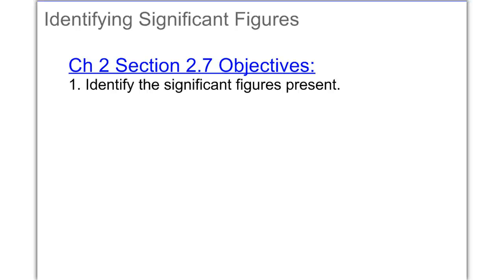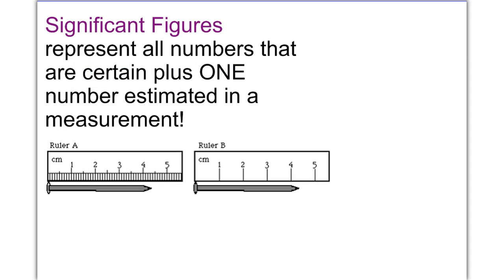Chapter 2, Section 2.7. We're going to learn how to identify significant figures present in a number. Significant figures represent all numbers that are certain plus one number that's estimated in a measurement. The more increments provided on the measuring tool, the more significant figures that are present.